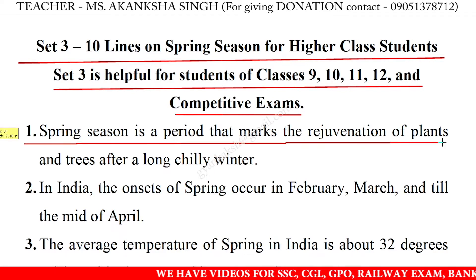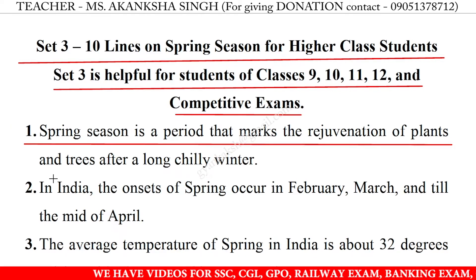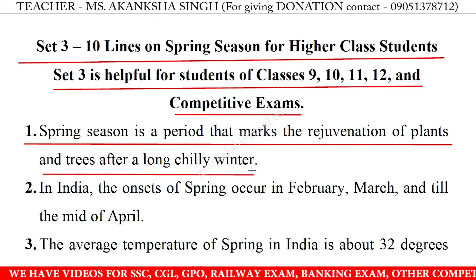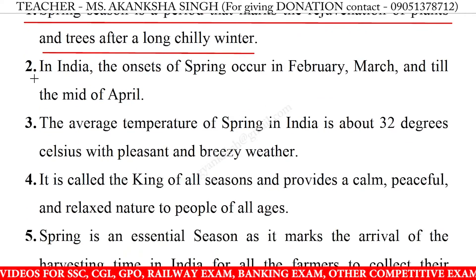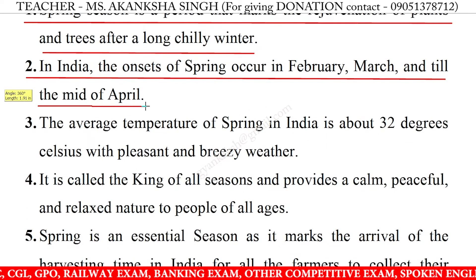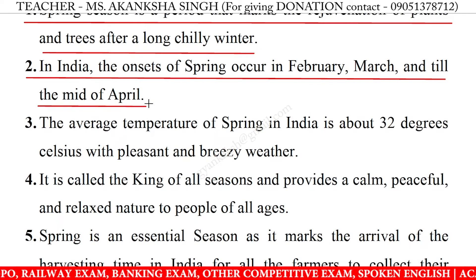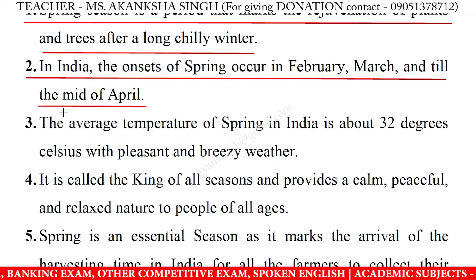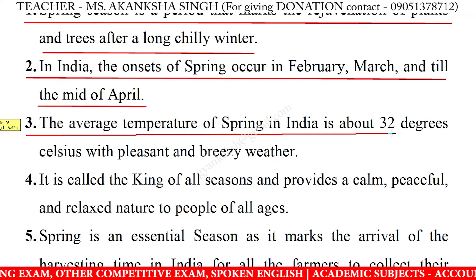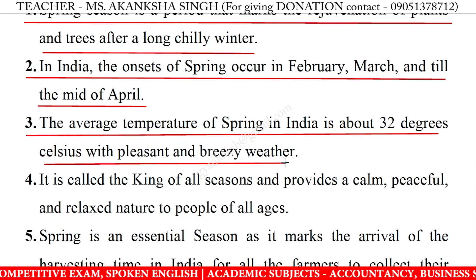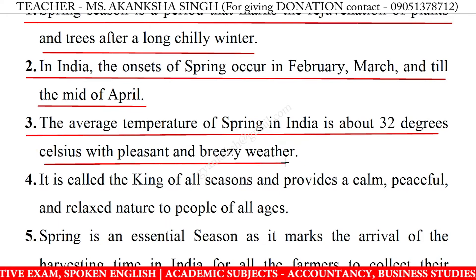17. Spring season is a period that marks the rejuvenation of plants and trees after a long chilly winter. In India, the onset of spring occurs in February, March and till the mid of April. The average temperature of spring in India is about 32 degrees Celsius with pleasant and breezy weather.